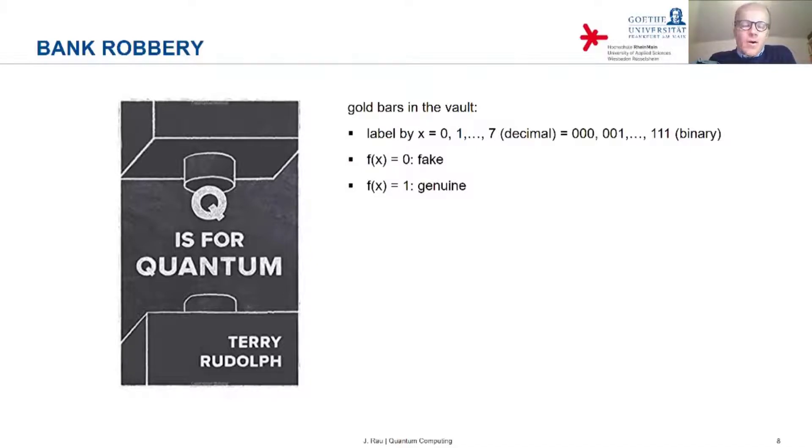And then the story says that in a vault with eight bars, either all eight of them are fake, or four fake and four genuine. Now, you can introduce a function f of x, where x is the label of a given gold bar. It's like an indicator function, and it returns zero if this bar is fake, and it returns one if the bar is genuine.